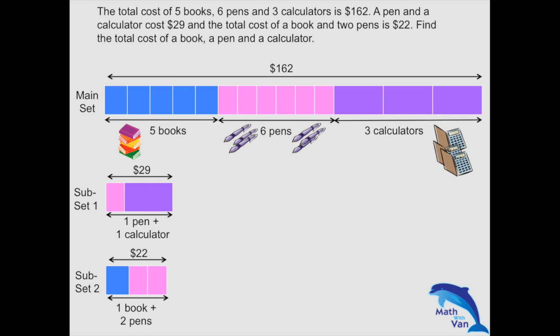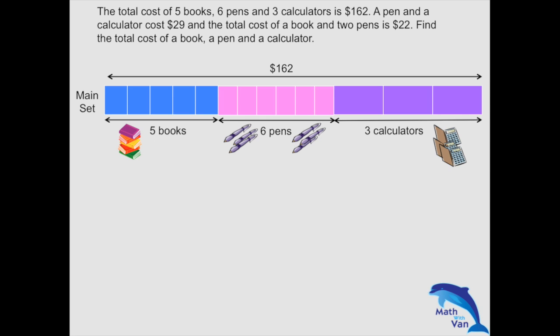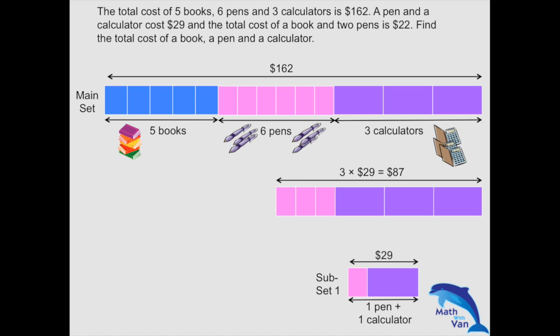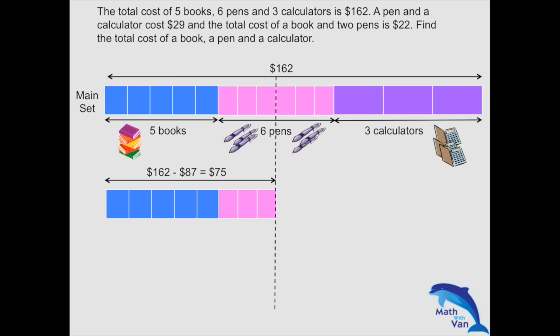If I want 3 calculators, I need 3 groups of subset one: 3 calculators plus 3 pens costing $87. They move as a set, so there's no way to separate them. The difference is $75, and that is 5 books plus 3 pens.